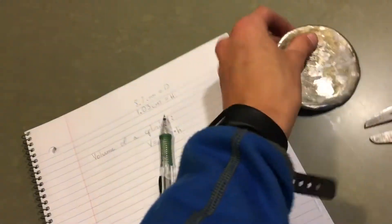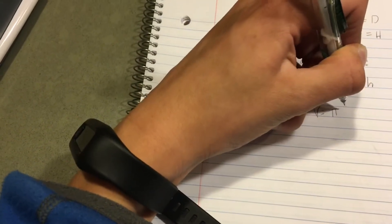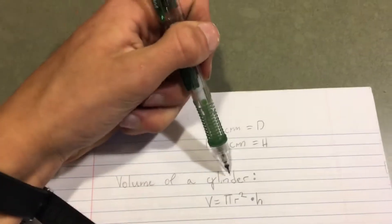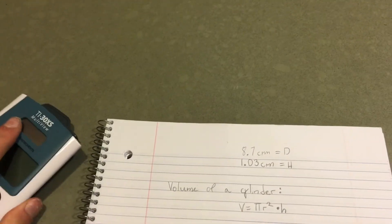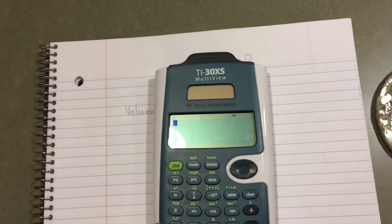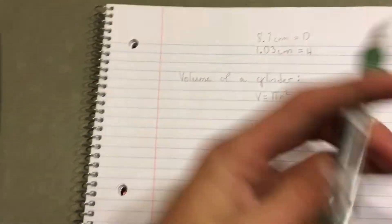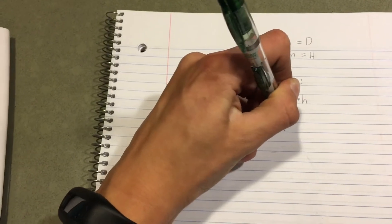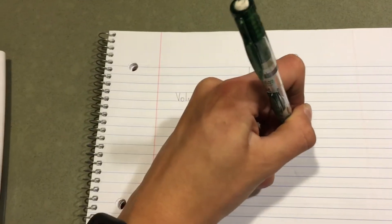So we just plug everything into the formula. You do V equals pi, and your radius is half of your diameter, so just take 8.7 divided by 2, you get 4.35 squared times h, and h is 1.03. Okay, so you have everything in there, you have to start to solve.